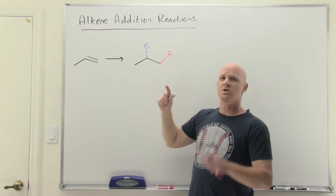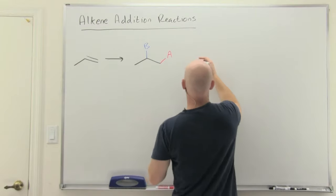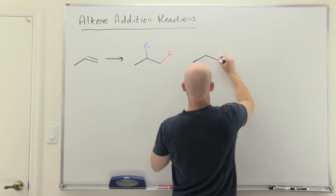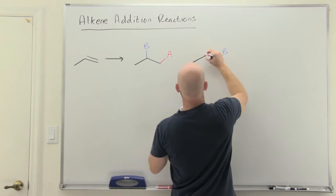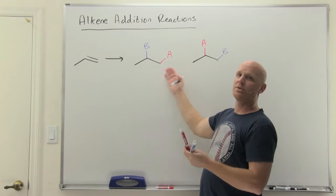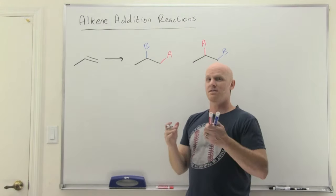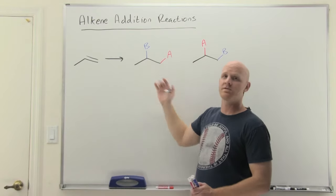And as long as you're adding two different things, we might have to consider them adding in two different ways. And so I've got it written one way here, but maybe B here adds on the other side. And then A ends up where B used to be. And so we've got to at least consider the possibility of these two ways. And we'll find out that for most of these reactions, they end up with two different groups and they prefer one of these over the other.